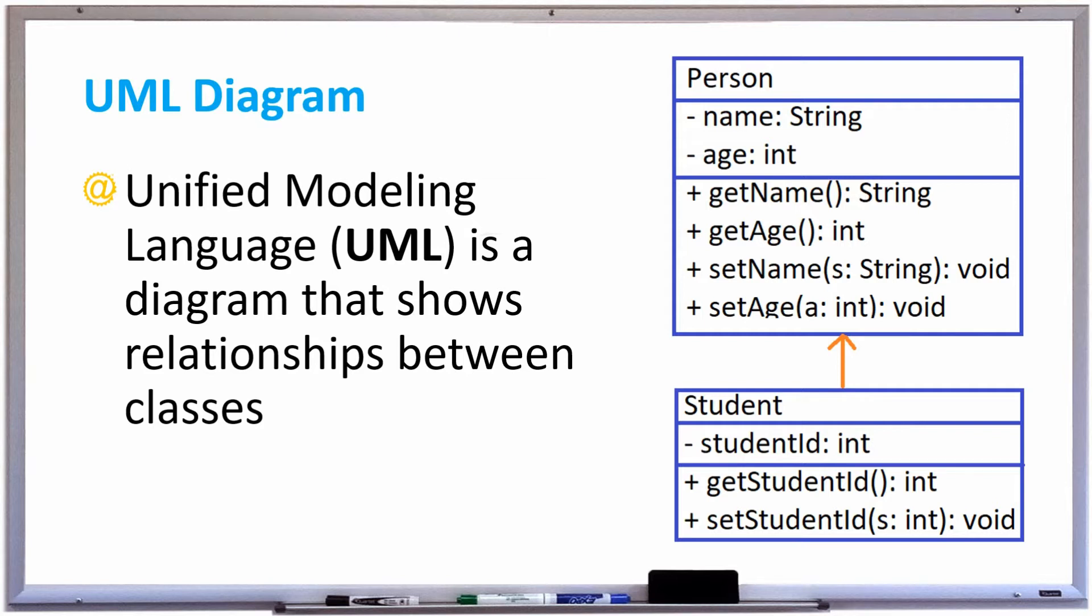It's a box with three sections, where the top section is the name of the class, the middle section are the names of the instance fields, and the bottom section is the names of the instance methods.